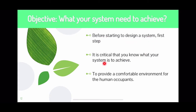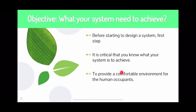The first objective before starting to design a system is to critically know what the system is going to do — or in other words, what the system is meant to achieve. This could be for human occupants, for non-human use like indoor farming, commercial buildings, sports and recreation such as gym centers, cafeterias, and hospitals.